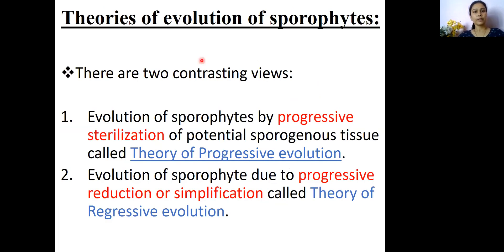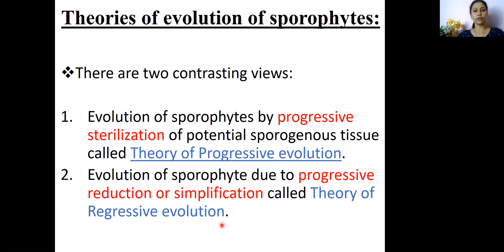Now let us see what we actually mean by the topic: evolution of sporophytes. To explain this entire process there are two different contrasting theories. The first theory is called the theory of progressive evolution, and the second one is called the theory of regressive evolution. Let us discuss these two theories one by one.